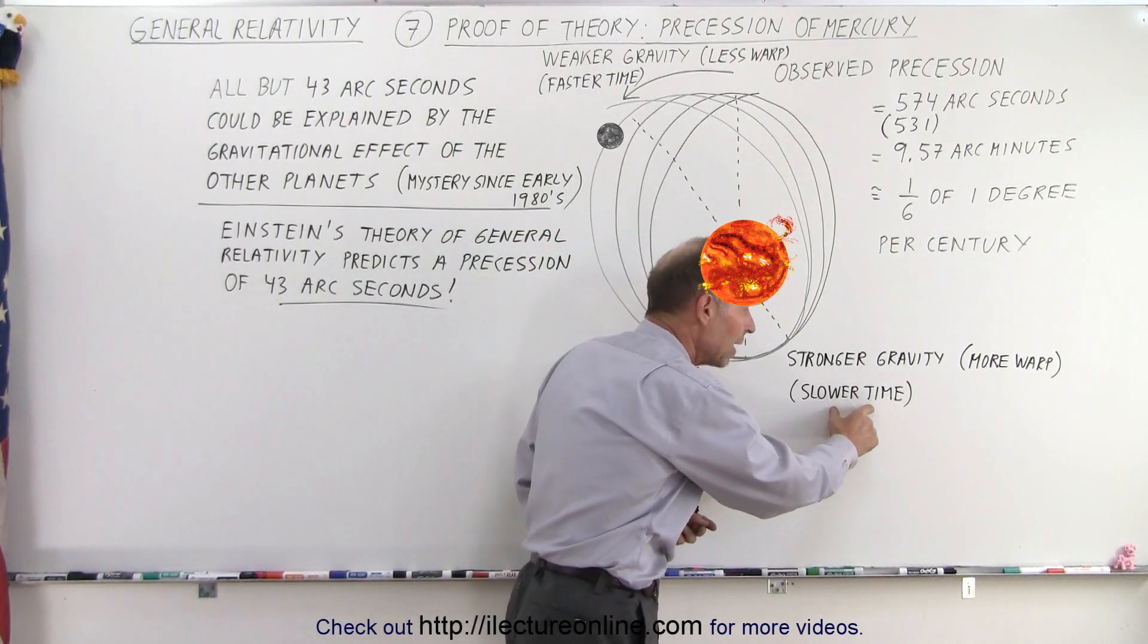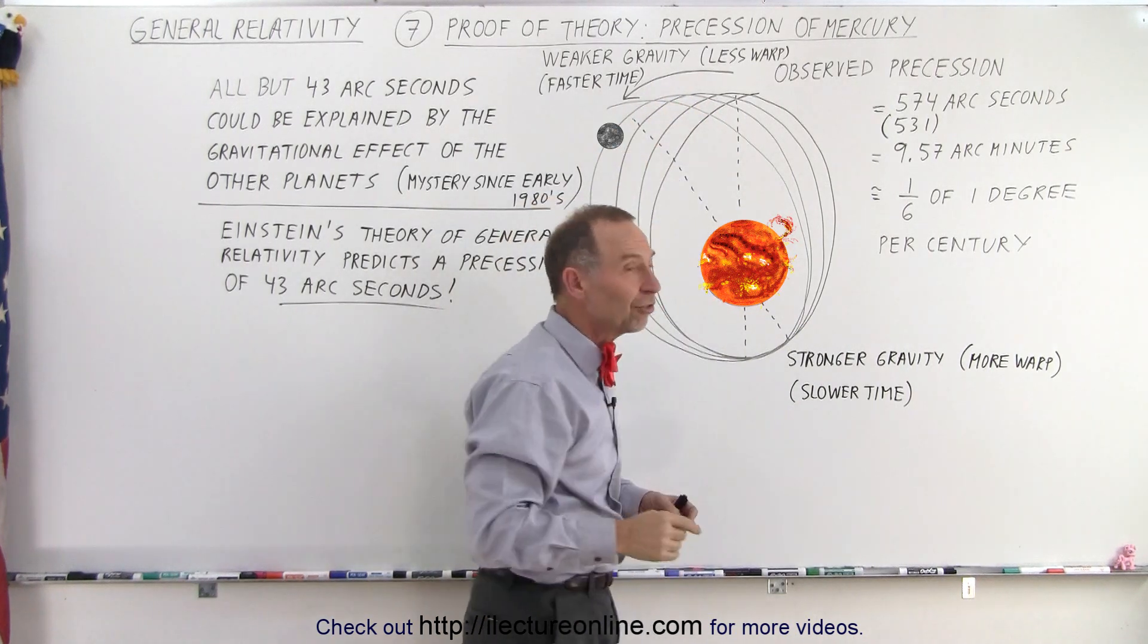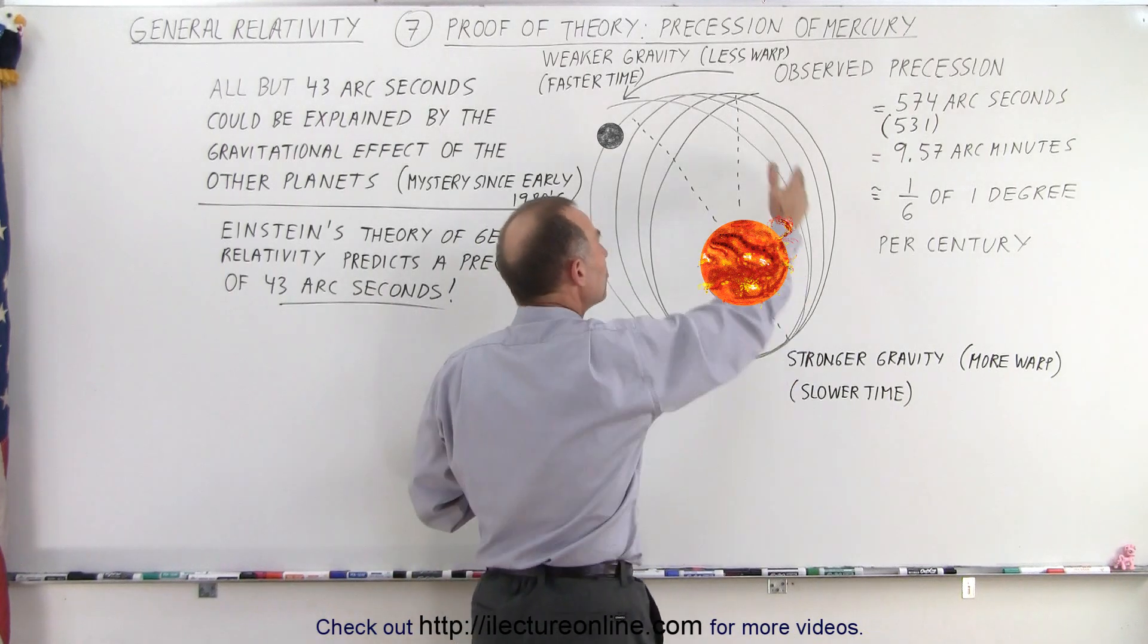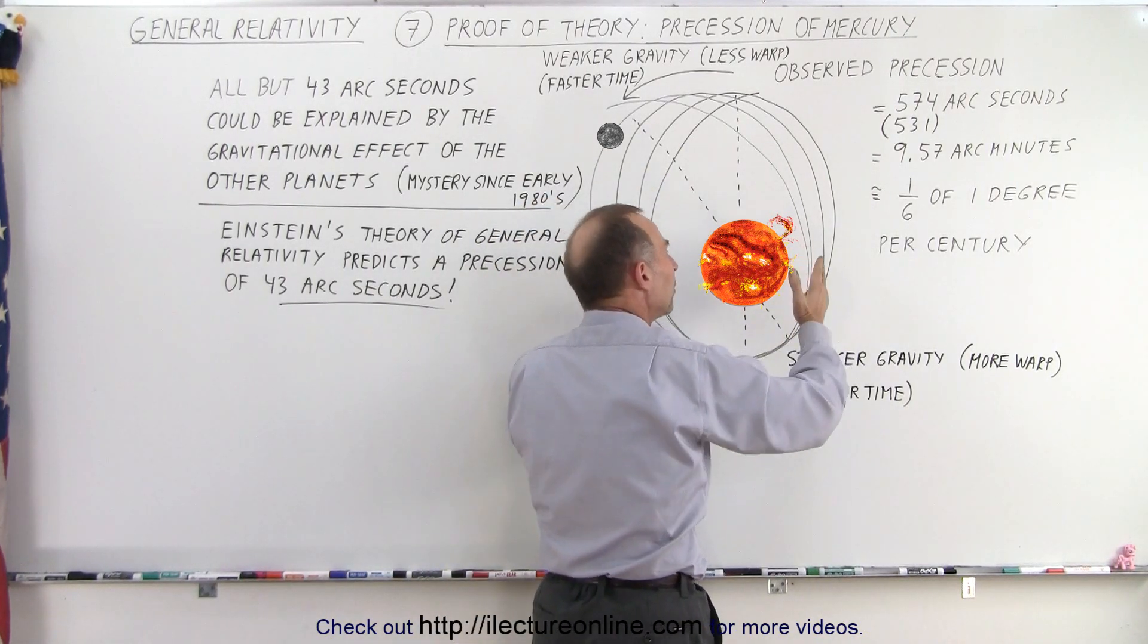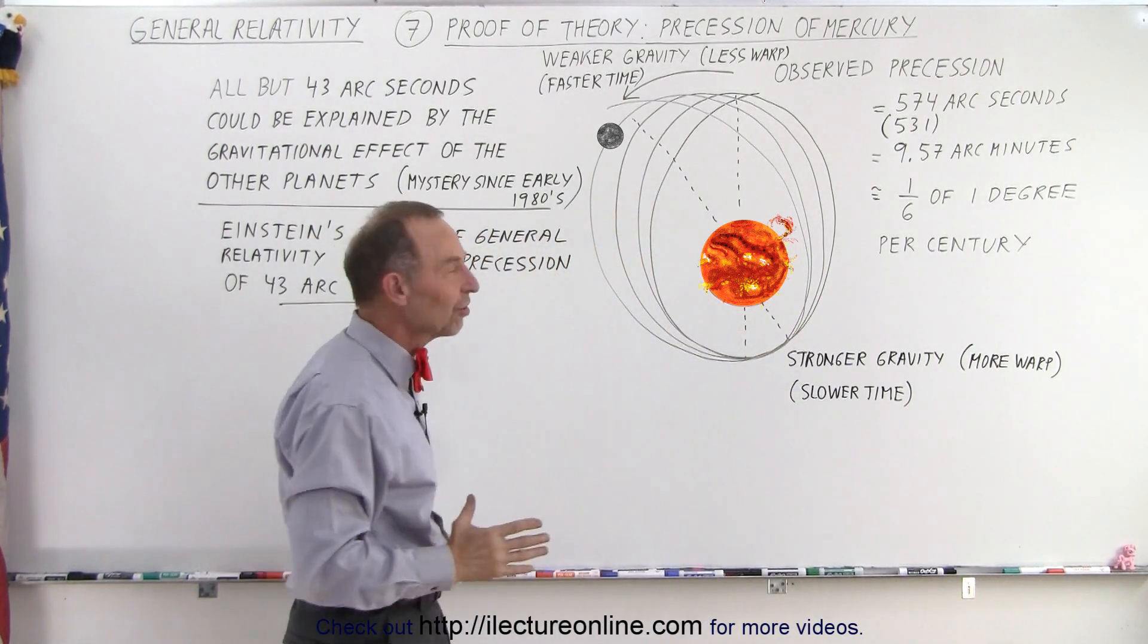When there's less of a warp, when the gravitational force is smaller, time runs faster. It's this difference in time that causes the motion to have more of a precession shift than there should be if we ignore that change in time.